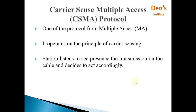The station listens to see the presence of transmission on the cable and decides to act accordingly. Because there are multiple stations trying to access a common medium, before starting to send the message, the station has to listen to the medium to check that it is free and can be used. This is called carrier sensing — sensing of the medium through which the message is to travel.